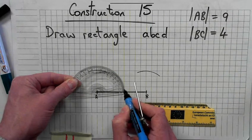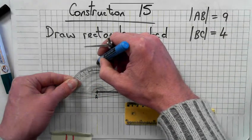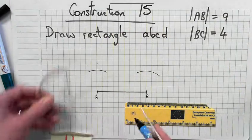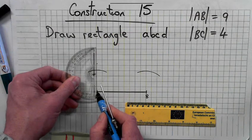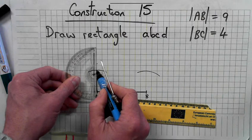Start at zero and come around until you get to 90 degrees. Join that line, the dot and point A.